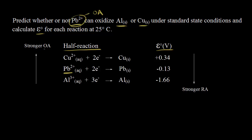Stronger oxidizing agents go up on the left side of the table. An oxidizing agent can oxidize any reducing agent below it. If I find aluminum here, aluminum is below Pb²⁺, so we predict that Pb²⁺ can oxidize aluminum. We can draw a diagonal line from Pb²⁺ to aluminum — this is sometimes called the diagonal rule.